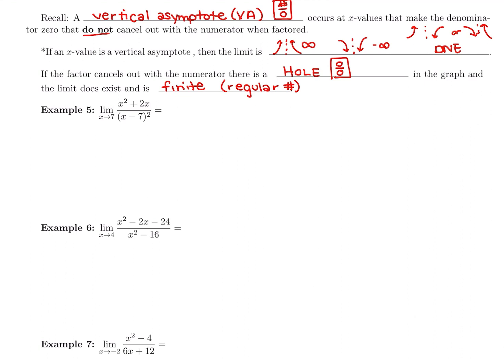Looking at this first problem, we want to approach 7 in x squared plus 2x. I'm going to grab my calculator and plug in 7: 7 squared plus 2 times 7 gives a numerator of 63. That's totally fine — 63 divided by anything is good unless we have 0 in the denominator. But 7 minus 7 is 0, and squared is still 0, so we do not have our final answer here.